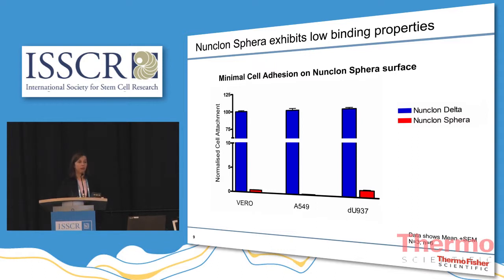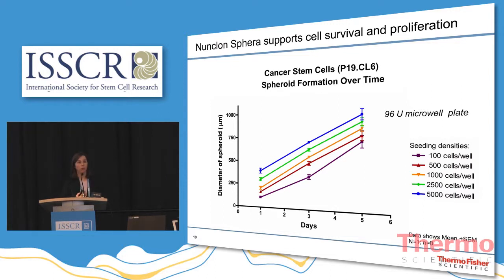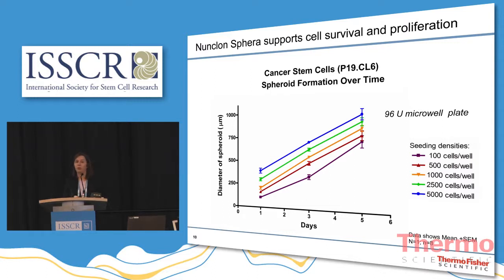Having shown that cells don't attach to the Nunclone Sphere surface, it was also very important to demonstrate that the Nunclone Sphere surface does not inhibit normal cell growth. We plated mouse cancer stem cells into a Nunclone Sphere round-bottom 96-well plate at five different densities, then monitored spheroid formation and growth over five days, observing normal cell growth. At the lowest seeding density, we saw an increase in spheroid volume of approximately six and a half fold, and at the highest seeding density, an increase of two and a half fold. Irrespective of seeding density, spheroids form and grow in volume over time, indicating that the Nunclone Sphere surface supports cell survival and proliferation.